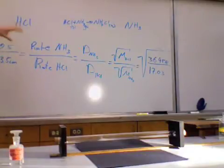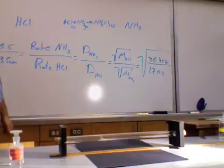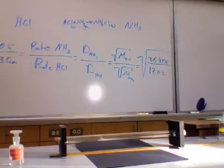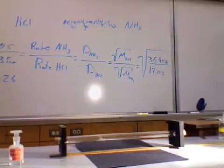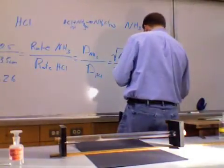So let's check those two ratios and see how close our measurement was. Alright, so on this side we have thirty point five divided by thirteen point five. Which works out to be two point two six. And on the right hand side, the sort of calculation side, the equation side here, we have thirty-six point four five eight divided by seventeen point oh three. And then we take the square root. Yeah. So this works out to be about one point four six.